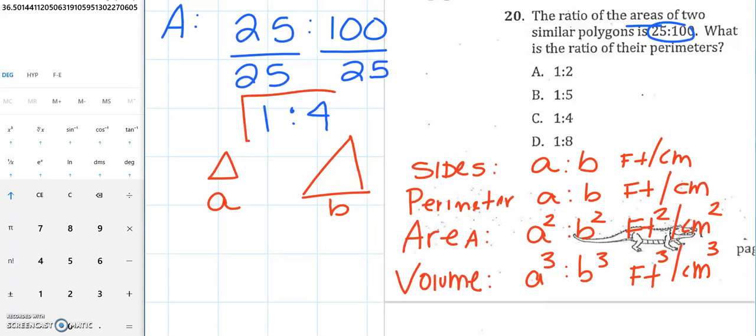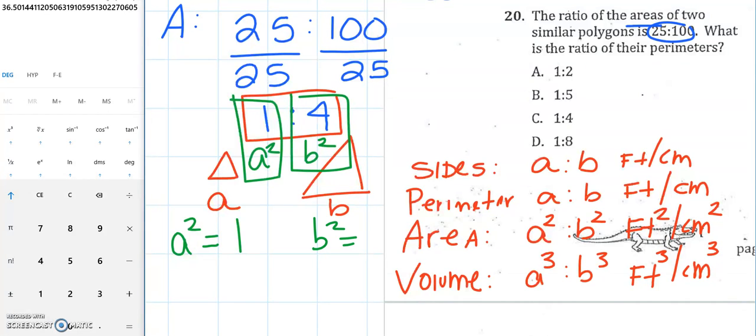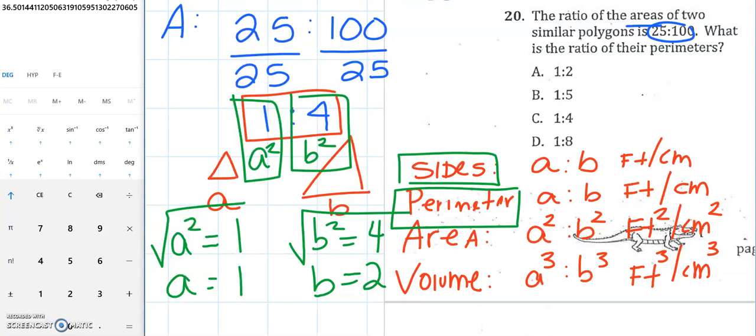So in this case, when they gave us this 1 to 4, 1 to 4 represents A squared to B squared. It's the ratio of the sides or the ratio of the perimeters squared. So to undo that and just get a regular A and a regular B, what I'm going to do is I'm going to square root both sides because I want to get rid of that square. So if A squared is 1 and B squared is 4, when I square root both sides, A is 1 because the square root of 1 is 1, and B is going to be 2. That's the ratio of the sides and it's going to be the ratio of the perimeters. So your answer here is going to be choice A. It's in the ratio of 1 to 2 for the sides and for the perimeters. It's a tricky question there.